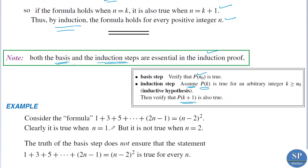For example, consider this formula: 1 plus 3 plus 5 plus ... plus (2n minus 1) is equal to (n minus 2) squared. We will check whether this holds. For n equals 1, the left-hand side is 2 times 1 minus 1, which is 1.